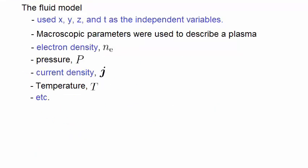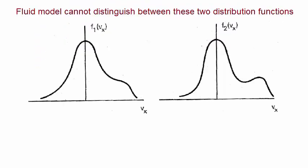But quite often, the distribution function of particles is quite important, for example, in discharge physics when working out the reaction rate coefficients. For example, a Fluid Model cannot distinguish between these two distribution functions, where there are some applications where this difference is quite important.